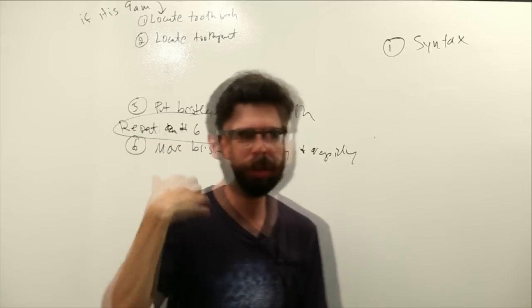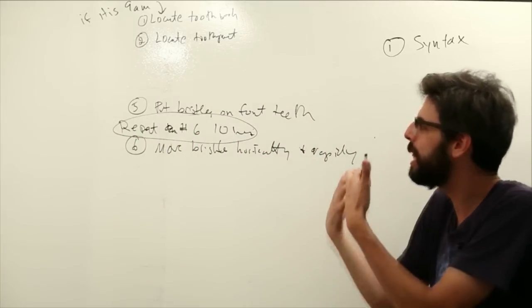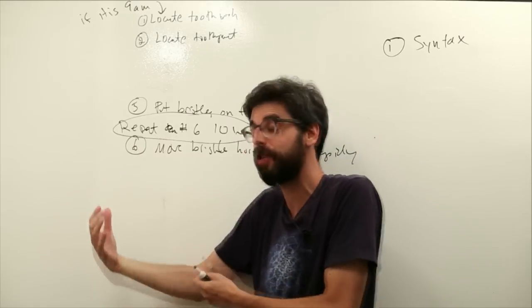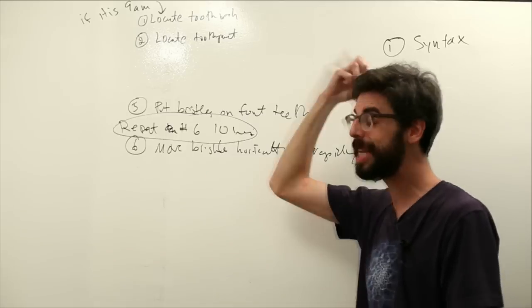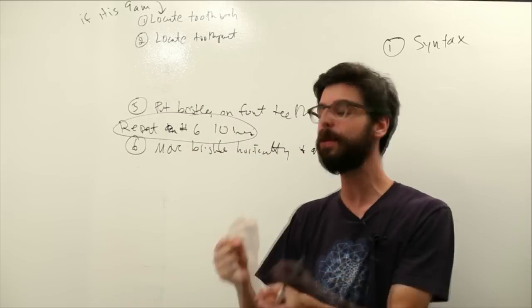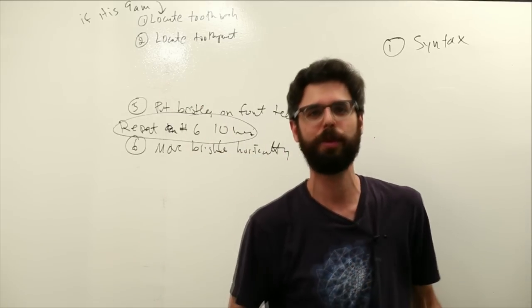So alright, I'm just showing you that as you start to write out these steps, think about, are there conditions? Are there things that get repeated? How would you really design this algorithm that has a beginning, a middle, and an end, that someone could follow and no detail would be lost?